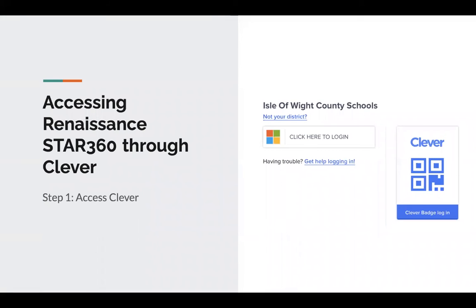Now that you know a little bit more about the purpose of the STAR 360 assessments, let's discuss in more detail the logging in process. As mentioned in the video, Isle of White County Schools now uses a single sign-on portal which is Clever. In order for your child to log in to take the test, they will first need to access Clever, where they will use either their login credentials, their username and password, or their QR code for the Clever portal.